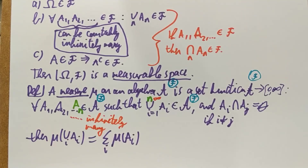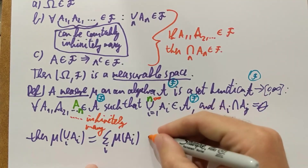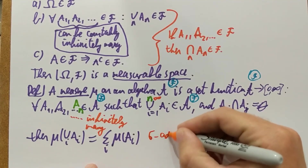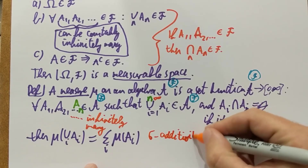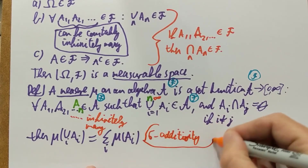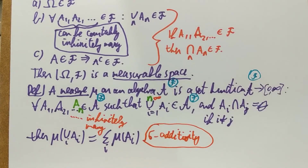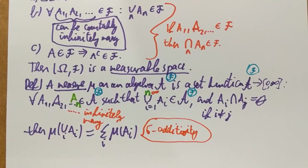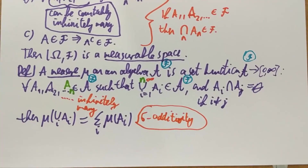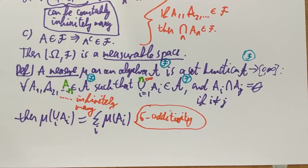That's what a measure is. This property is called sigma additivity — a sigma additive set function from the algebra or sigma algebra to the interval zero to infinity is called a measure.